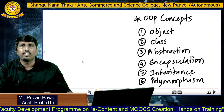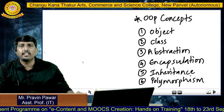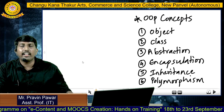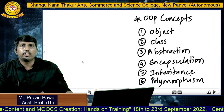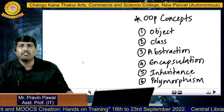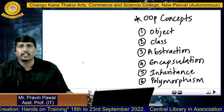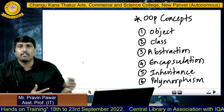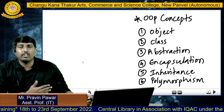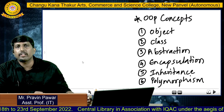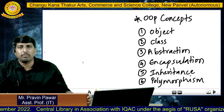The first concept is the object. An object is anything which is present in the real world — we can call it an object. For example, consider the fan, the tube light, or any person on earth — everyone can be called an object.